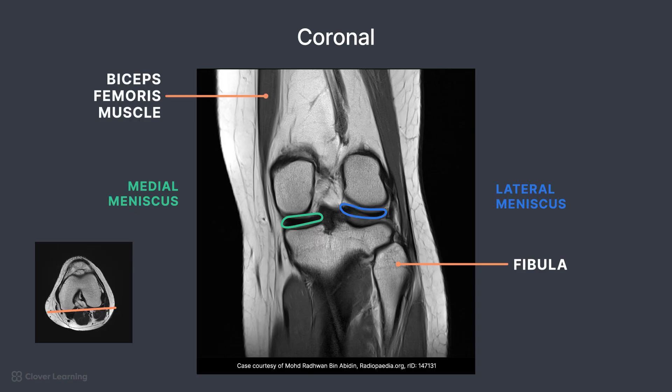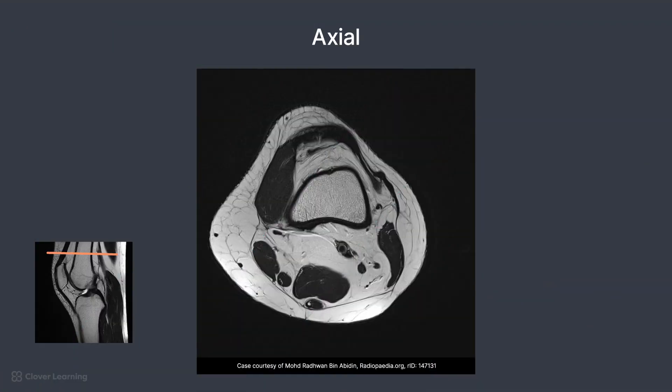The biceps femoris muscle is seen on the medial side and the sartorius muscle is on the lateral side of the posterior femur. Finally, let's take a look at a few axial images. Let's address a simple technique to determine the medial and lateral side of the image: typically, there is going to be more fat located on the medial side of the knee joint.